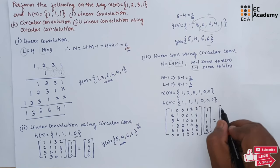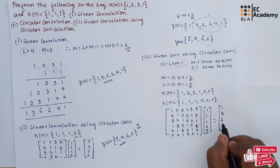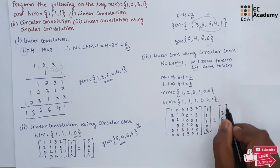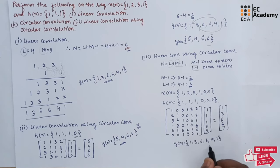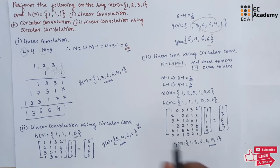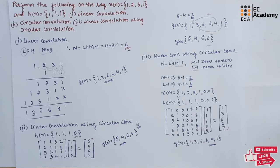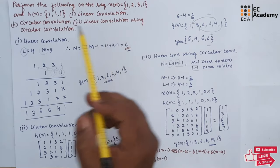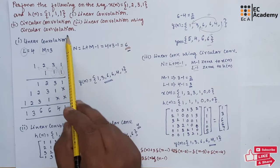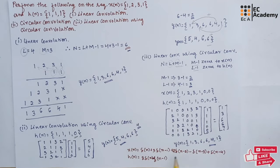If we multiply these two matrices, we get the answer as 1, 3, 6, 6, 4, and 1. So after calculation, the new sequence y of n is equal to 1, 3, 6, 6, 4, and 1. This is the linear convolution result, which is the same as before. So we have successfully performed linear convolution using circular convolution. Now take this as an assignment problem where x of n and h of n are given in the form of delta, and you need to perform linear convolution, circular convolution, and linear convolution using circular convolution.